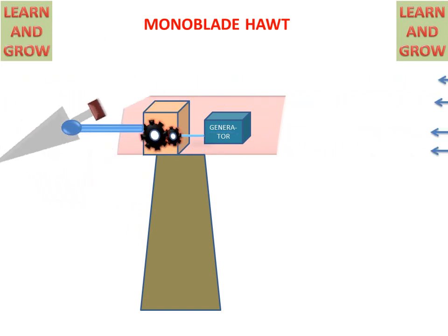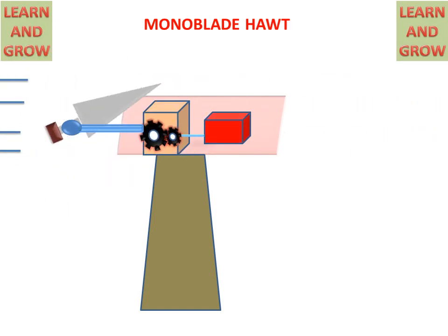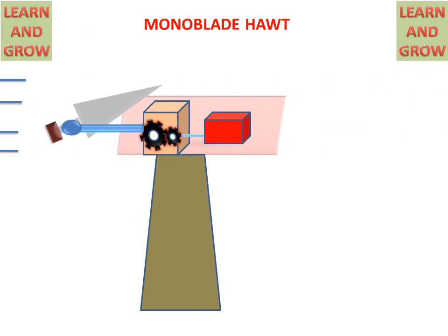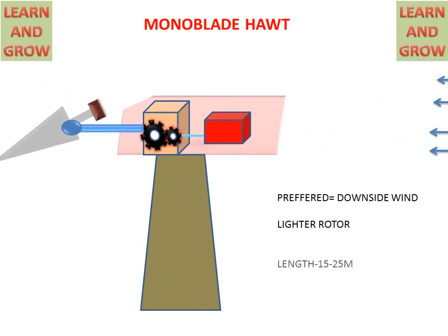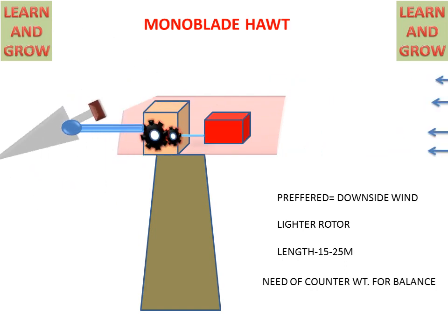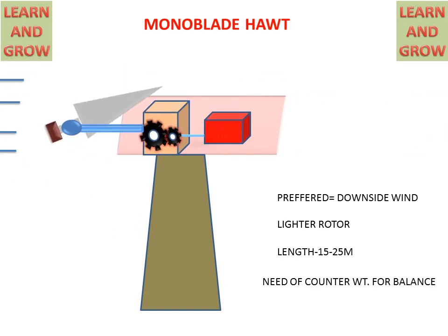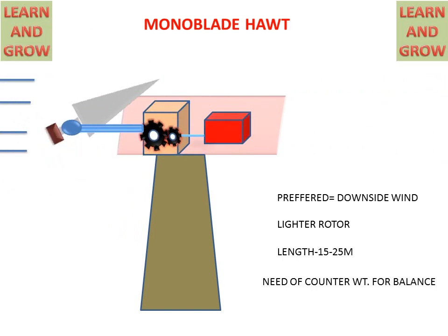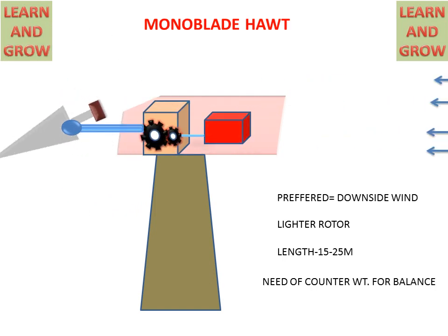The gears will rotate, and the gear shaft is connected to the generator, so the generator will produce electricity by converting the mechanical energy of the gearbox shaft. This mono blade turbine has downside wind preferred, a lighter rotor with light weight, and the length of the rotor will be 15 to 25 meters, but it requires a counterweight for balancing because it has only one blade.